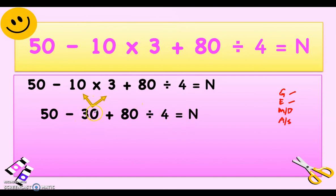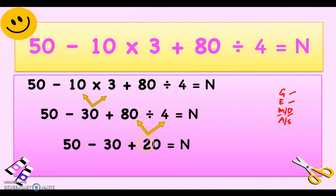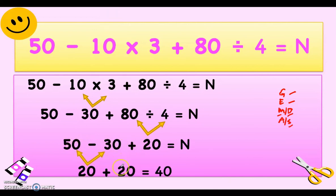After multiplication, proceed to division: 80 divided by 4 is 20. Copy the rest: 50 minus 30 plus 20. Now subtraction comes before addition from left to right, so we subtract first: 50 minus 30 is 20, plus 20 equals 40. Take note: if you added first — 30 plus 20 equals 50, then 50 minus 50 is 0 — you get a different answer. Always follow the GEMDAS rule.